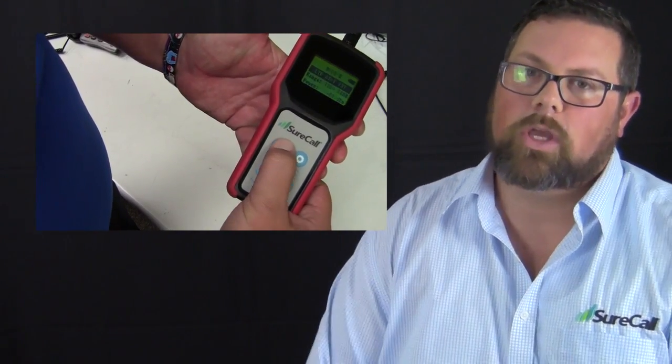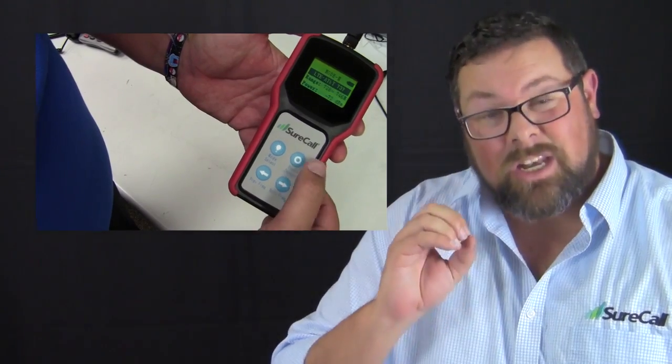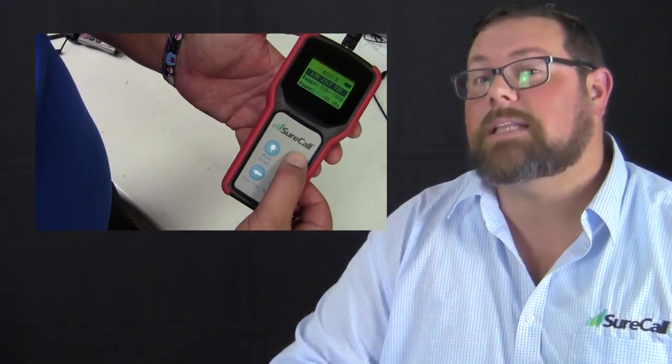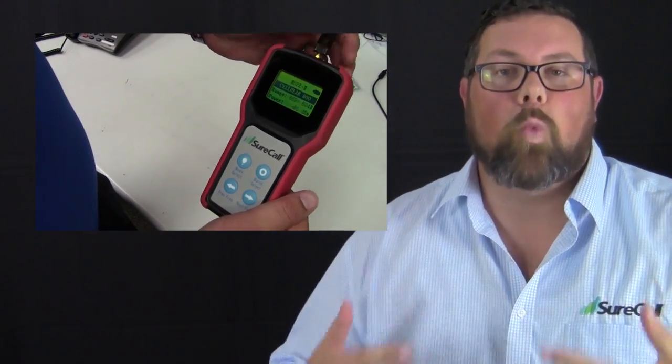Another thing that you're going to need is a signal meter. Now for some of your smaller jobs, your residential jobs, those kinds of things, it's okay to use your cell phone to get an idea of what kind of signal you're working with outside. But if you're looking to conduct a proper and complete site survey, you really do need to make sure that you either have a spectrum analyzer or a wide band carrier neutral signal meter. And we do have those available over at surecall.com, so make sure you go check it out.